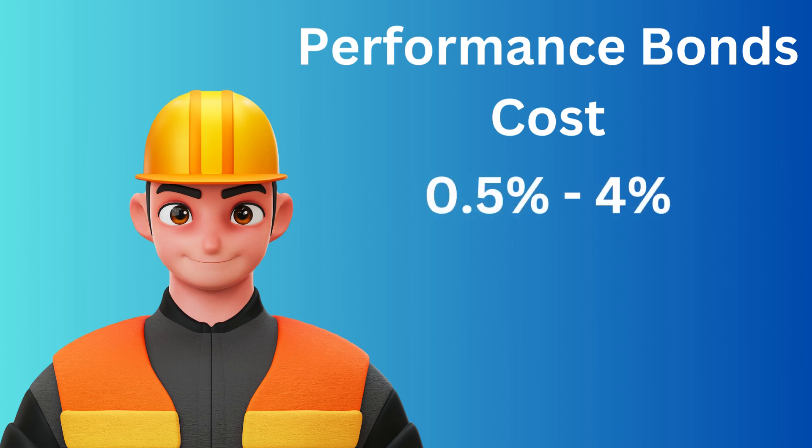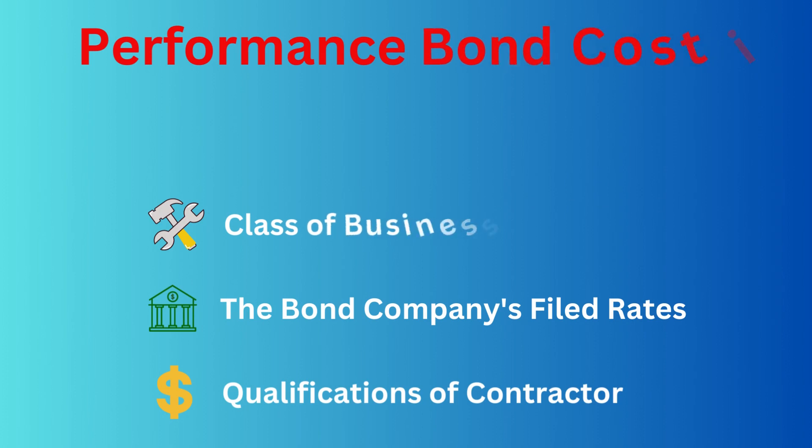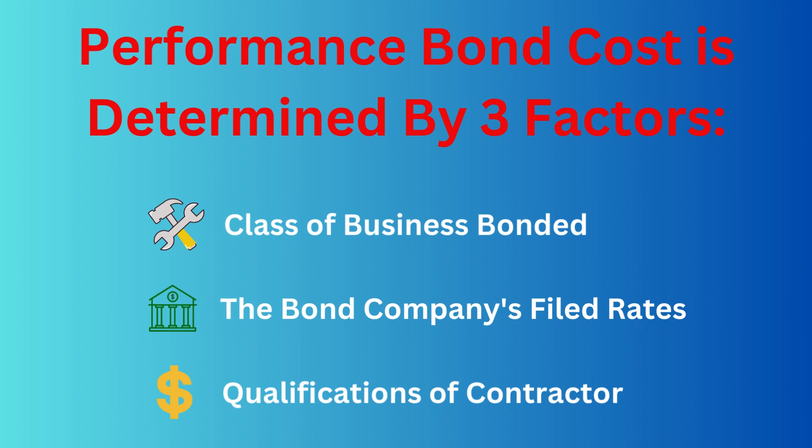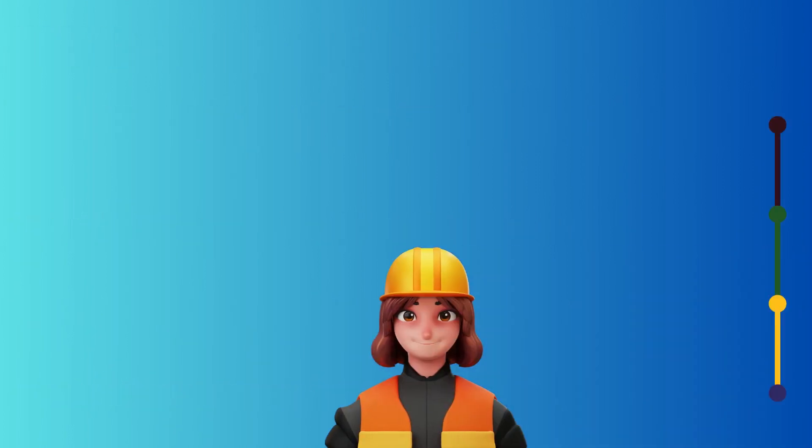Learn more about how these rates are determined and how to improve them. Performance bond and payment bond rates are determined by three factors: the class of business that is being bonded, the underwriting strength of the contractor being bonded, and the surety bond company's filed rates in the state where the work is being performed.